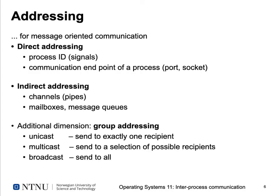For addressing, we need to indicate which communication partner we want to exchange information with. With direct addressing, we can use process IDs, which are unique positive integers in a system. Since a process ID doesn't change while the process exists, we can use it to send information directly to that specific process.